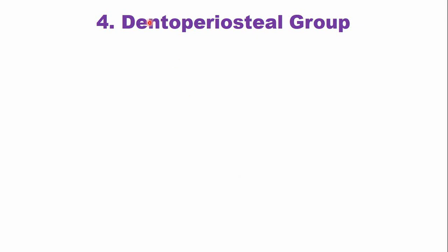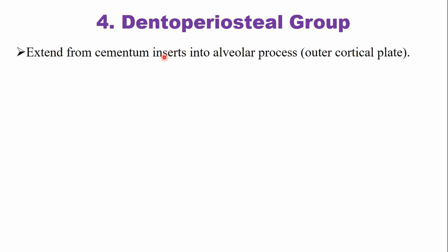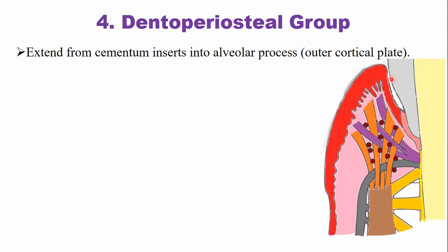Another group among the gingival fibers is the dentoperiosteum fibers. These originate from the cementum and insert into the periosteum of the alveolar process — specifically into the outer cortical plate rather than the inner surface of the alveolus. The gray-colored fibers in the picture represent the dentoperiosteum fibers.